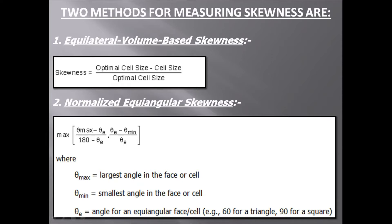The formula takes the maximum value from those two expressions. Here, theta_max is the largest angle in the face or cell, theta_min is the smallest angle in the face or cell, and theta_e is the angle for an equiangular face or cell — that is, 60° for a triangle and 90° for a square. So when the cell is triangular, theta_e should be 60, and if the cell is square, theta_e should be 90. The maximum value from the two expressions is taken.